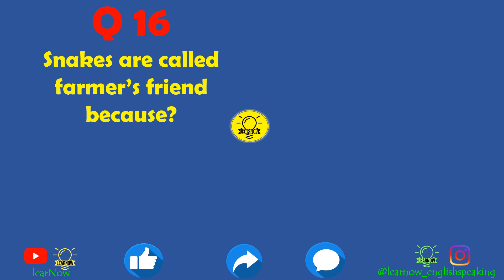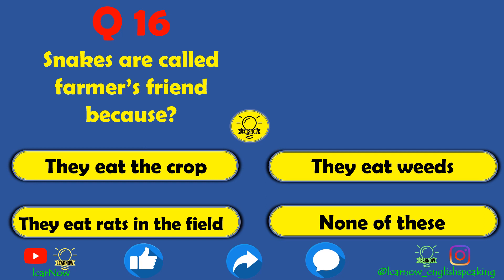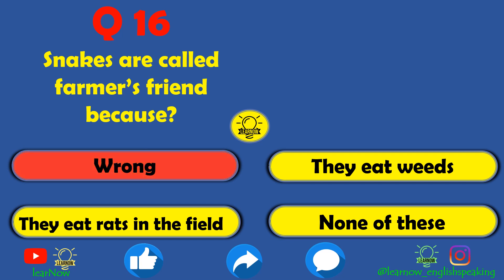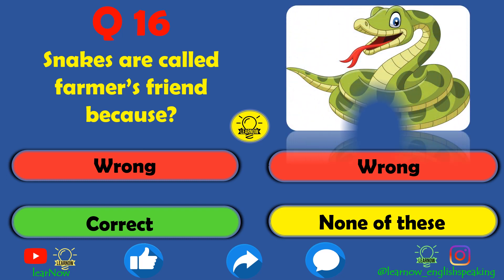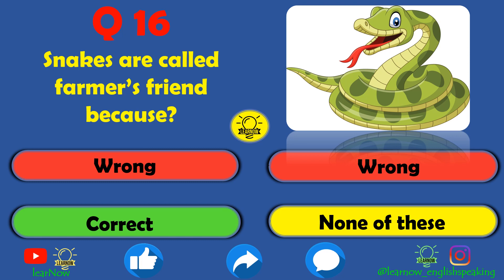Next question: snakes are called farmer's friend because of what? They eat the crop is wrong, they eat the weeds is also wrong. The correct answer is they eat rats in the field — snakes eat rats in the field and save the crop, which is why they are called farmer's friend.